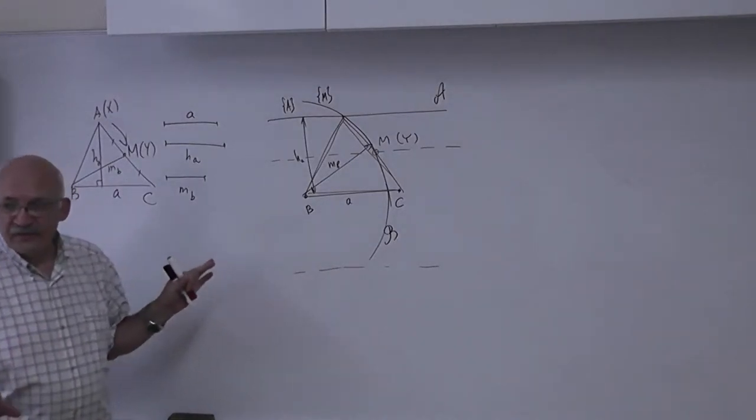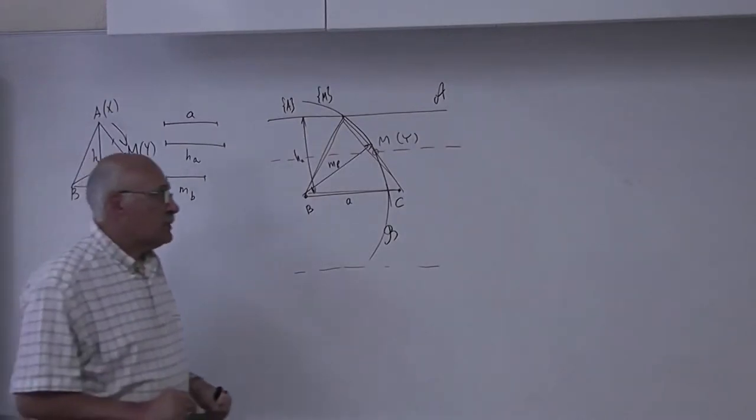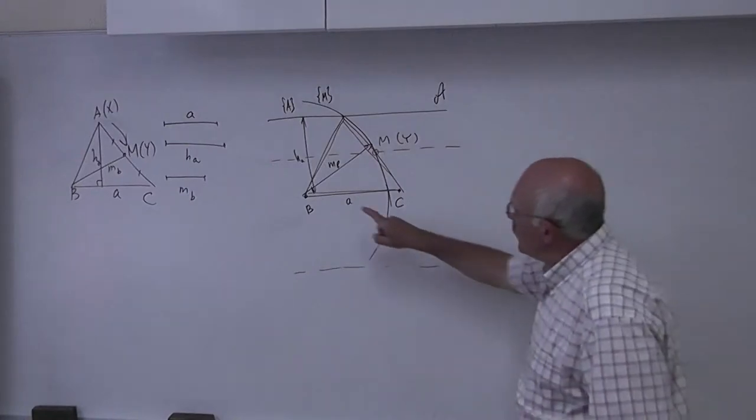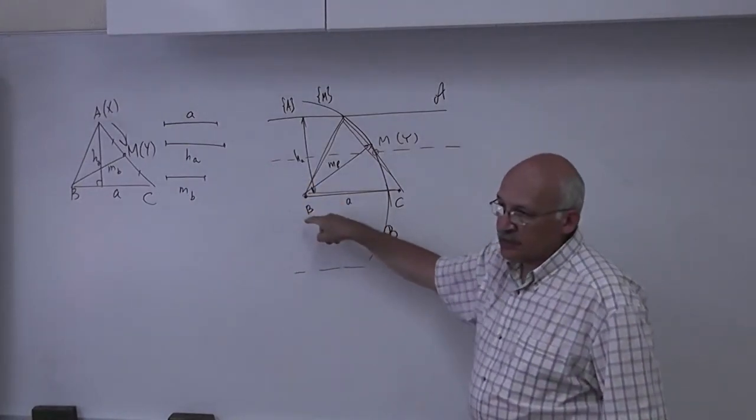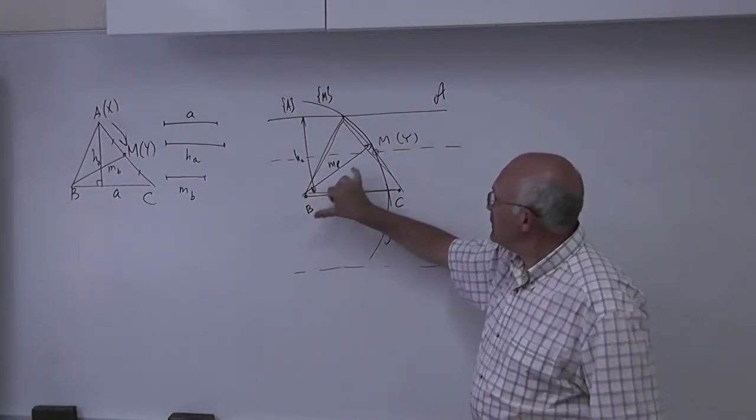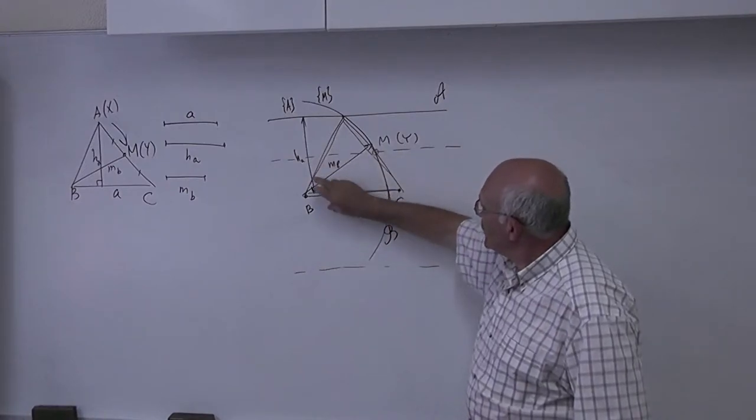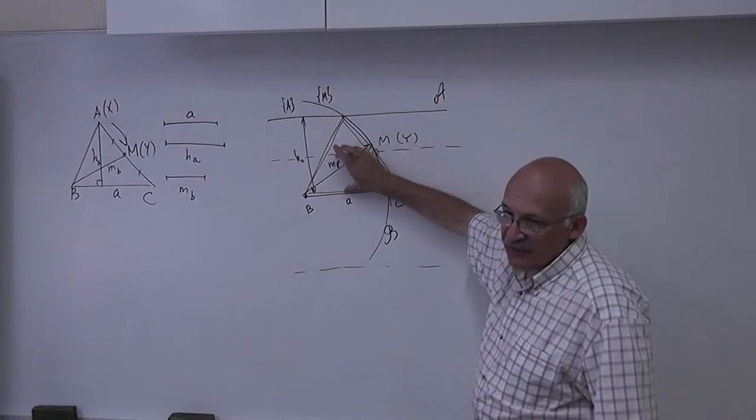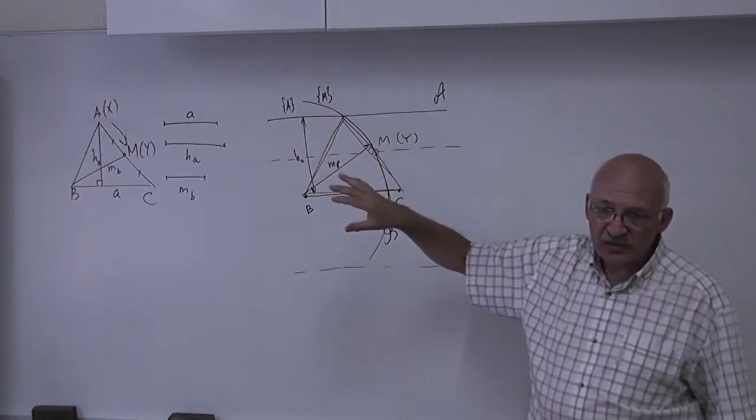Now we are setting the number of solutions. Of course, if a circle is too small, like this, if the radius of the circle M will be less than half, than this distance, half the altitude, then there will be no solutions.